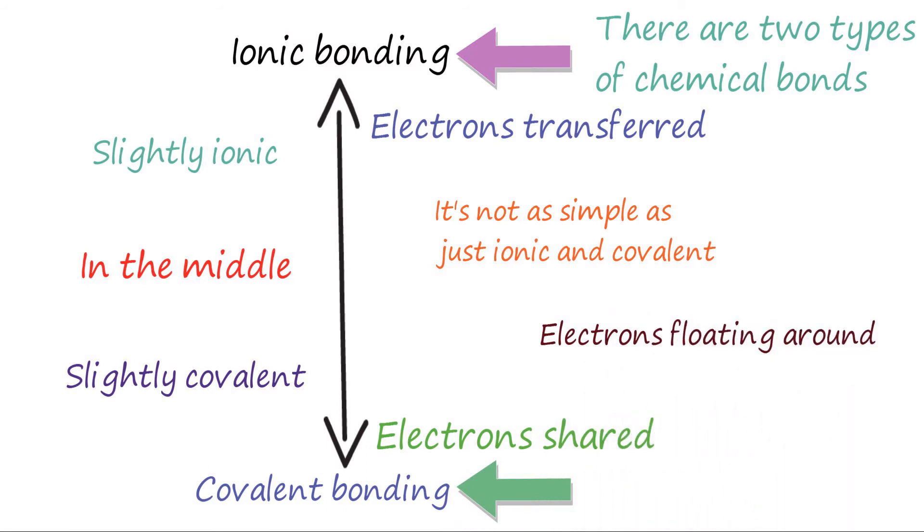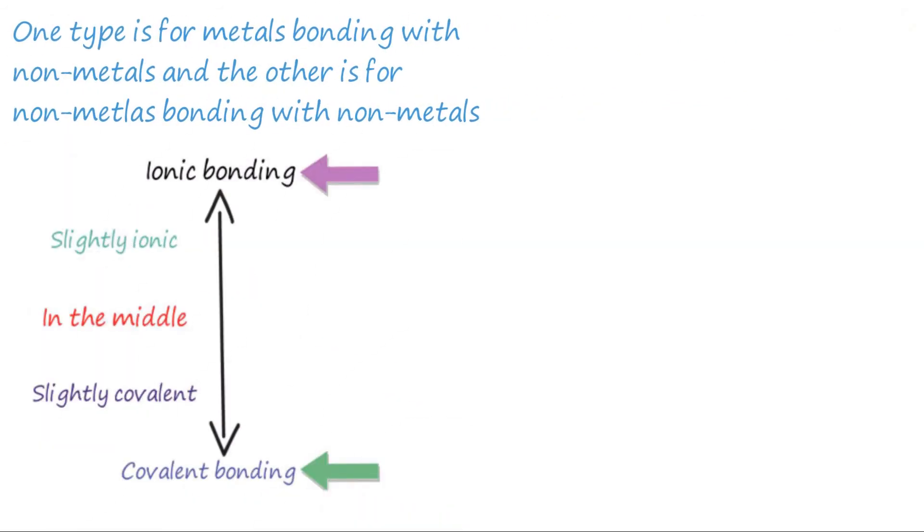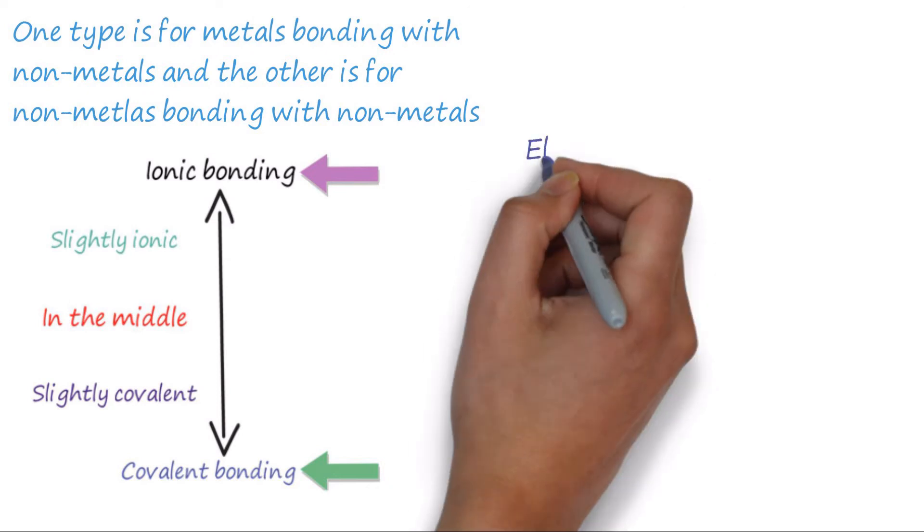So the bond formed is dependent on where the electrons want to float. Is it on one atom only? On each atom equally? Or one atom more than the other? Knowing this, we can see why this mentality does not work for saying ionic bonding is for metal to non-metals, and covalent is for non-metals to non-metals.